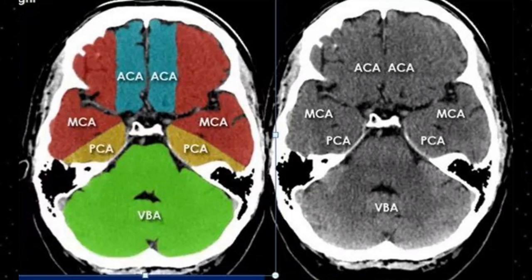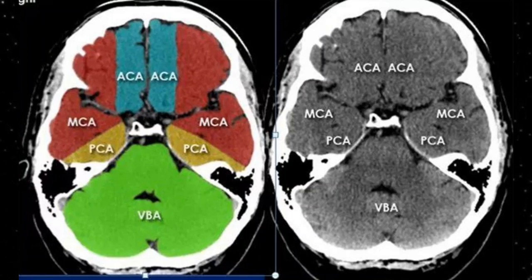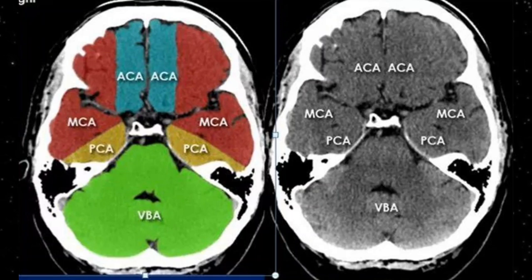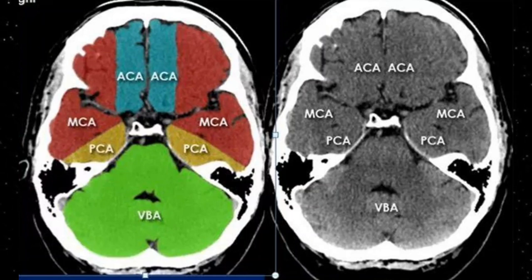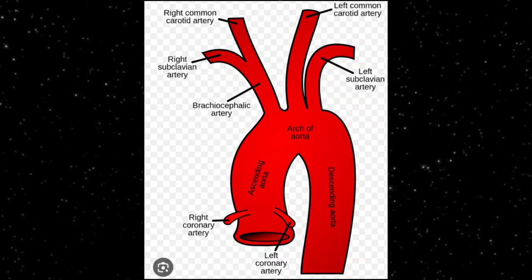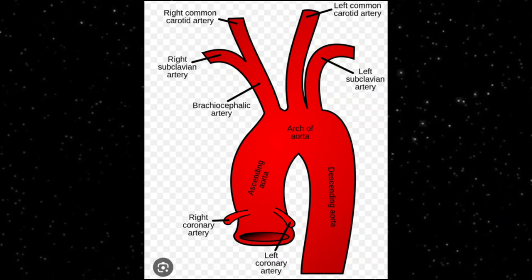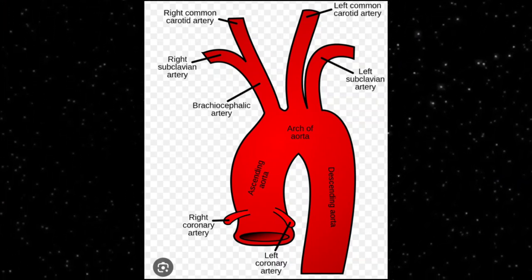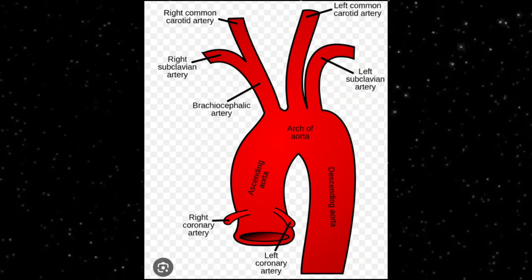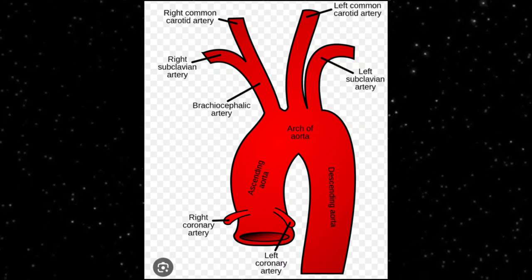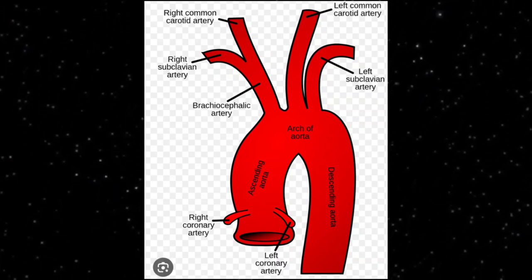Going more inferior, you can see the cerebellum shown in green, labeled VBA — standing for vertebral basilar artery, also called the posterior circulation. This system supplies the brain stem. From the arch of aorta, the brachiocephalic artery arises on the right and divides into the right subclavian and right common carotid arteries, while on the left, the subclavian and common carotid arteries arise directly from the aortic arch.